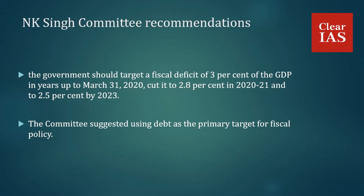The NK Singh Committee recommended that the government should target a fiscal deficit of 3% of GDP in years up to March 31st 2020, cut it to 2.8% in 2020–21, and to 2.5% by 2023. The committee also suggested using debt as the primary target for fiscal policy — the debt-to-GDP ratio was 70% in 2017. For the debt-to-GDP ratio, the committee advocated a target of 60%, with a 40% limit for the centre and 20% limit for the states.